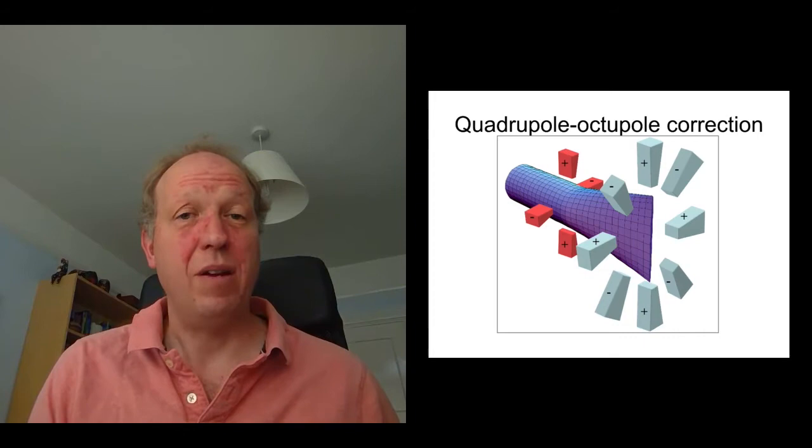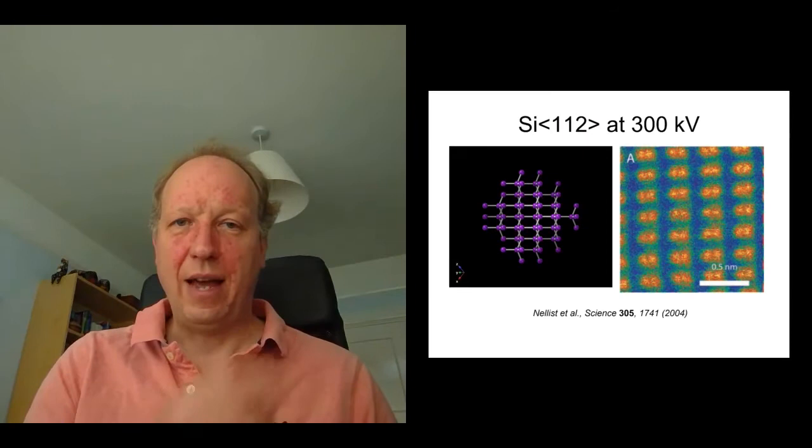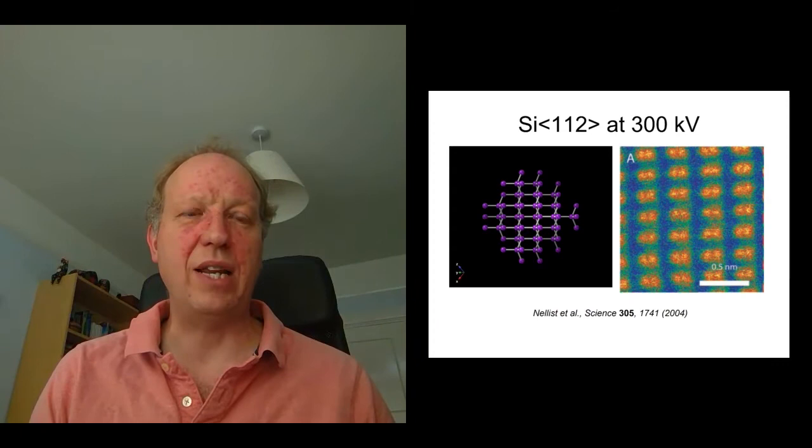Now these are not cheap, they've cost you about a half million pounds for one of these correctors, so a little bit more expensive than a pair of spectacles, but they work. And they do in fact fix the spherical aberration of electron lenses. And here's a result that I took back in 2004, looking at a piece of silicon.